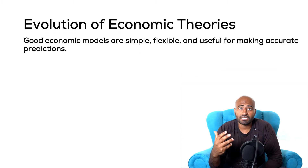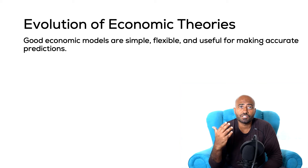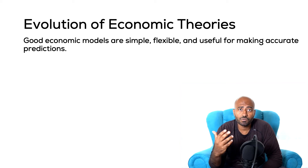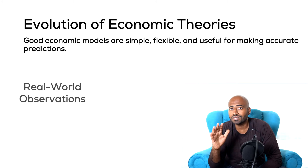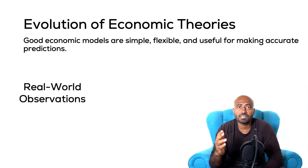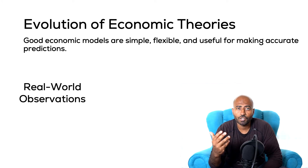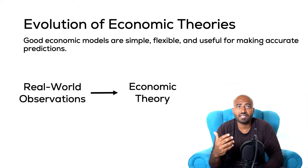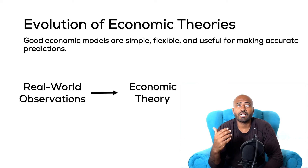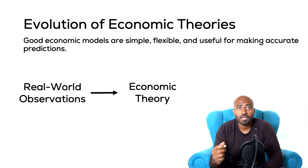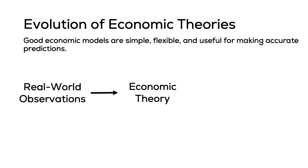The evolution of economic growth theory is that we really didn't come to the realization directly. Economists first started with a real-world observation — they looked at the world and noticed something that required an explanation. Using this data that they saw in the real world, they helped develop a theory to explain the observation. They applied it to real-world scenarios, the theory then influenced policy, and governments implemented this policy.